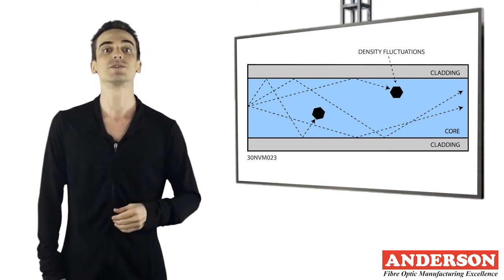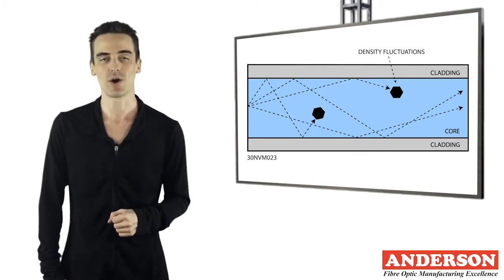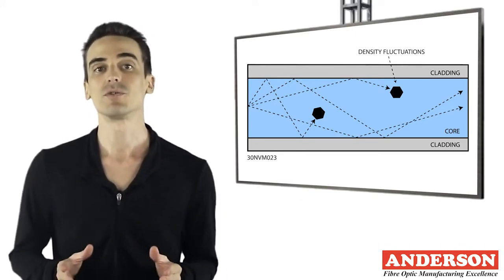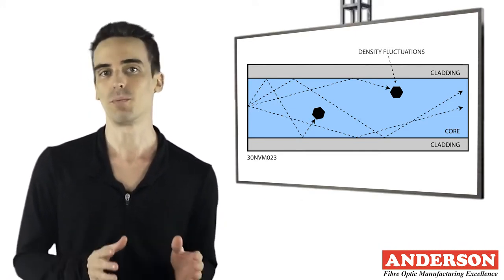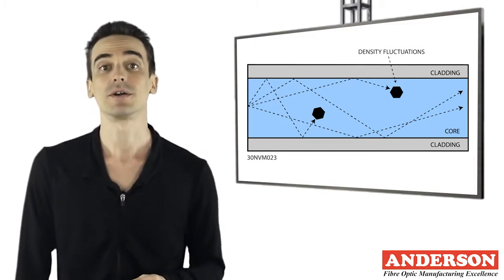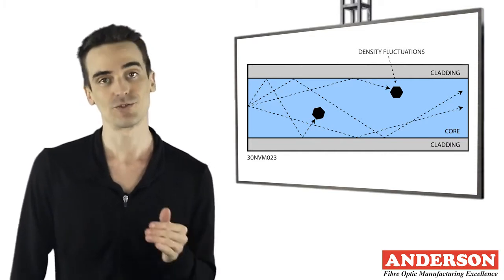In this video, we discuss absorption and its main causes. Absorption is that portion of attenuation in optical fiber resulting from the conversion of optical power to heat. There are two types of absorption: intrinsic absorption and extrinsic absorption.